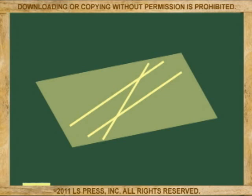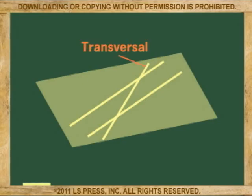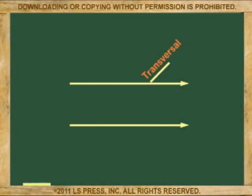Here are two parallel lines cut by another line. The cutting line is called a transversal. When you cut two parallel lines by a transversal, the result is the formation of eight angles.